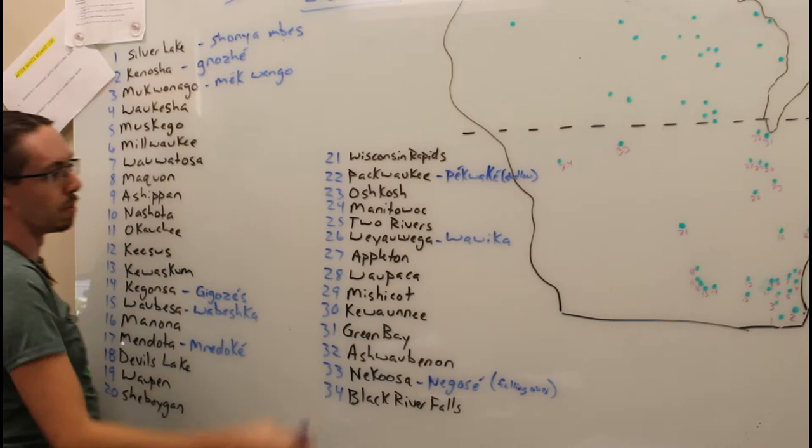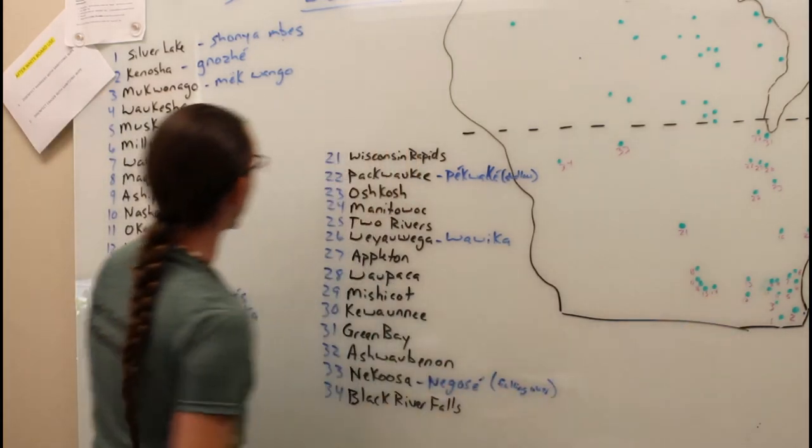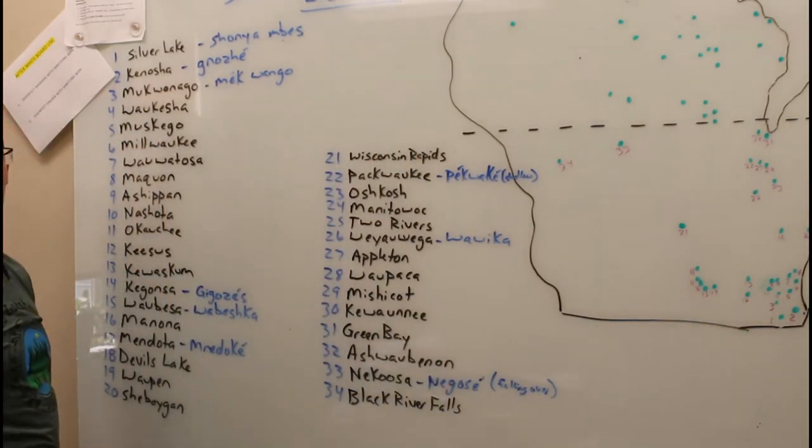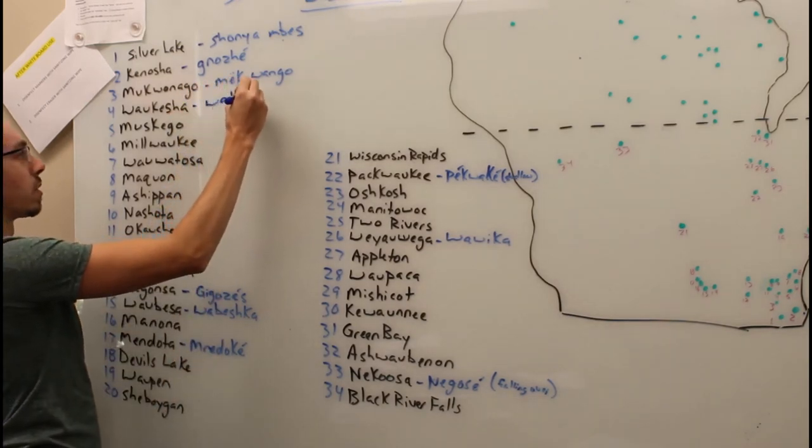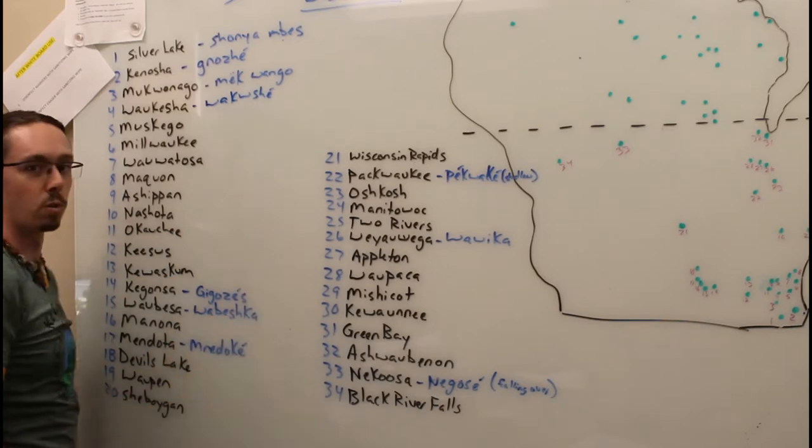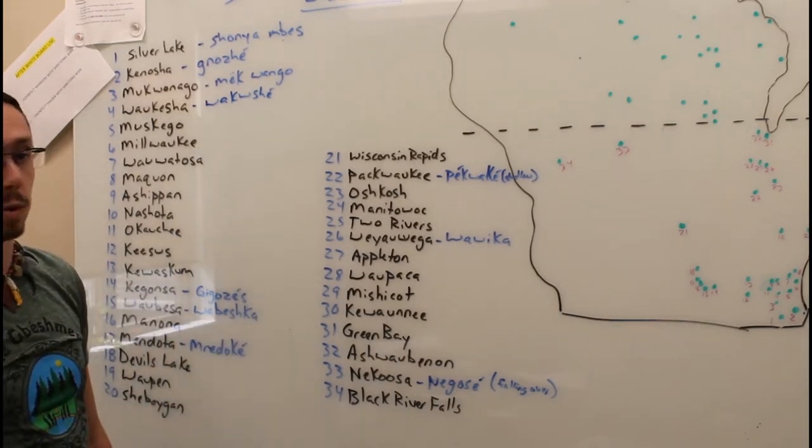Number four here, we've got Waukesha, Wisconsin. Waukesha comes from our word Waukesha, which is a fox.